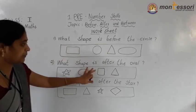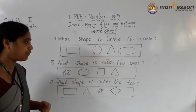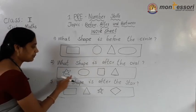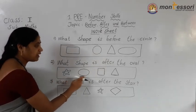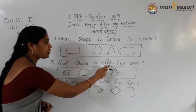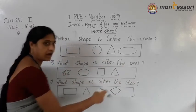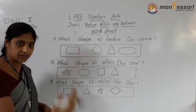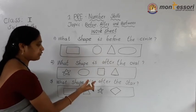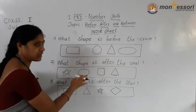Second question: what shape is after the oval? Here circle, oval, square and triangle. After the oval — after means tarwata, means back. Here oval — after the oval, which shape is there? You select.